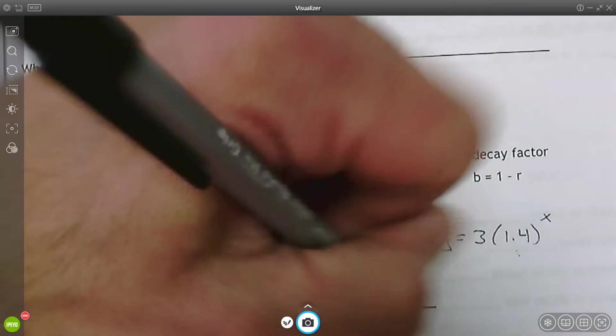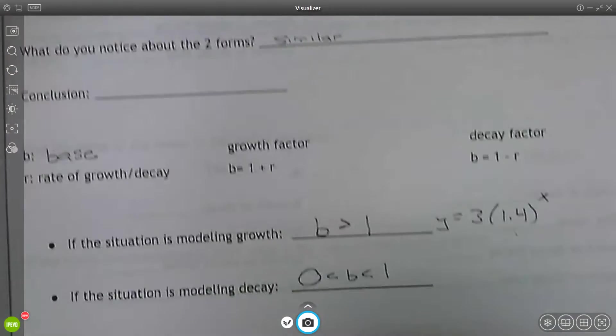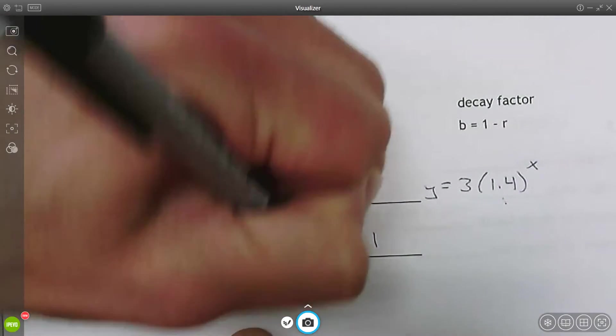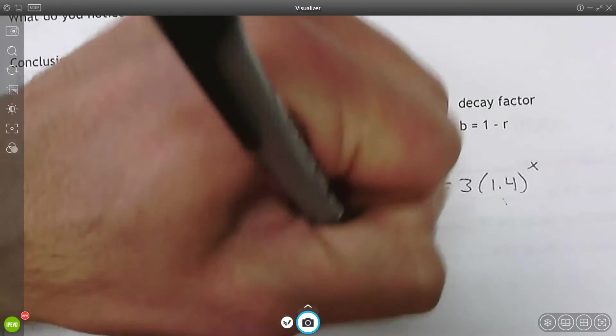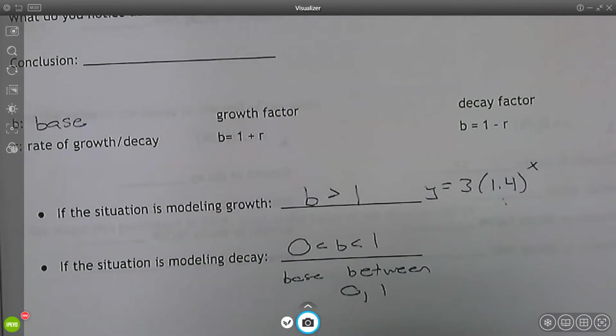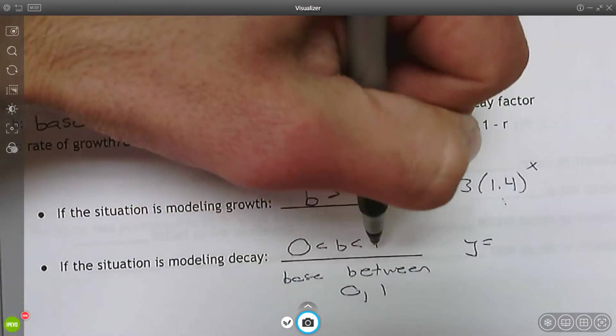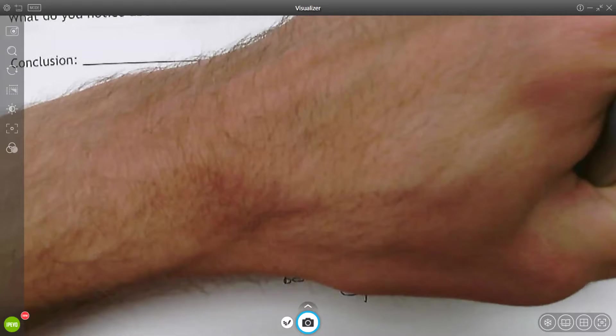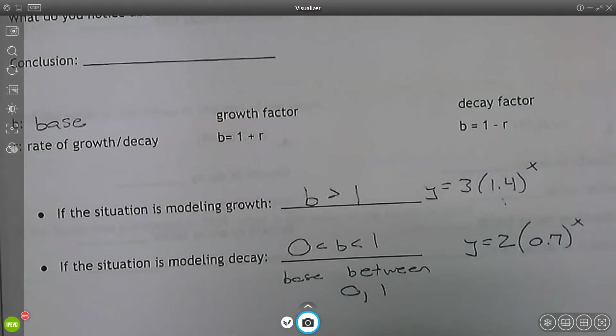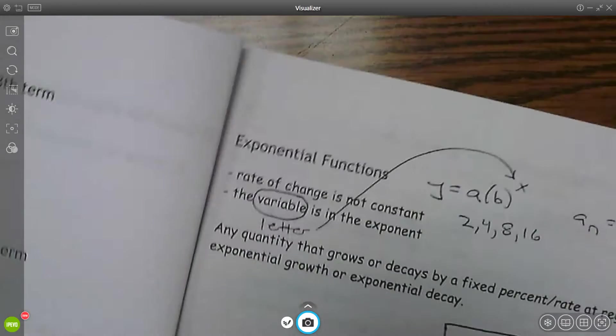Exponential decay is if your base is between zero and one. So if the base is between zero and one, that's exponential decay. We're not going to worry about negatives at all. So if I have say two times 0.7 to the x power, this is exponential decay because the base is less than one, but greater than zero.